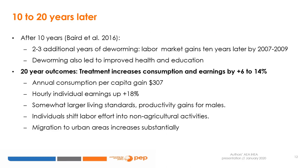In the 10-year evaluation, the authors found that 2 to 3 additional years of deworming induced by the program implied labor market gains by 2007 to 2009, along with improved health and education outcomes. The 20-year outcomes indicate that treatment increased consumption and earnings by more than 6 to 14%, with gains in per capita consumption of more than $300 a year, higher hourly individual earnings by 18%, larger living standards, productivity gains mostly for males, and shifts into non-agricultural activities and urban migration.